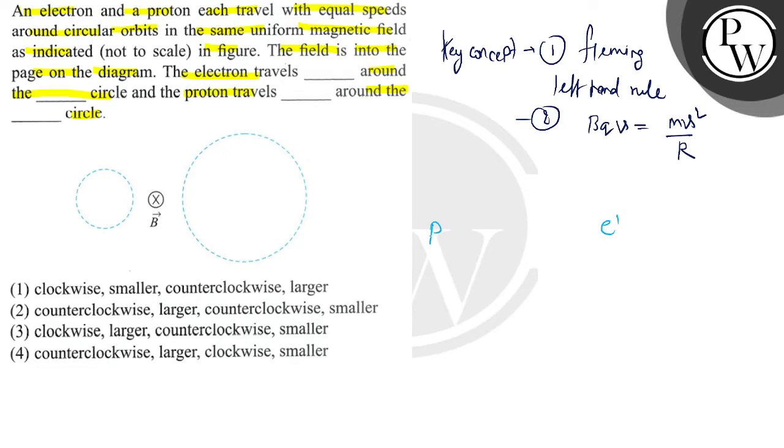Now we have given the magnetic field direction that is into the page. So let's make a coordinate system. Let's suppose it is X, it is Y and this is Z. So here we can see Z that is into the page. So this means we can understand that this Z represents the magnetic field direction. And let's suppose a positive charge.